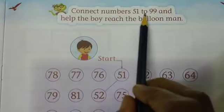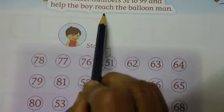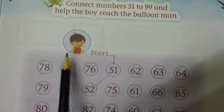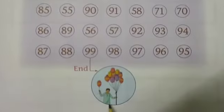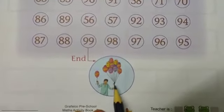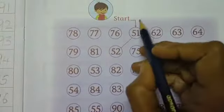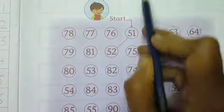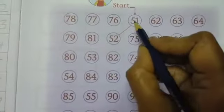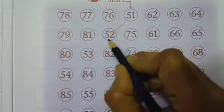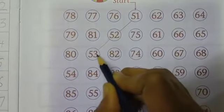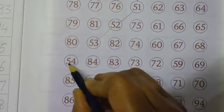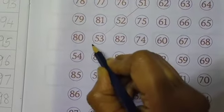Where is the balloon? Here the man is having balloons, so this small boy has to reach the balloon man. Starting number is 51, here this one. After 51 what number? 52. After 52 what number? 53.